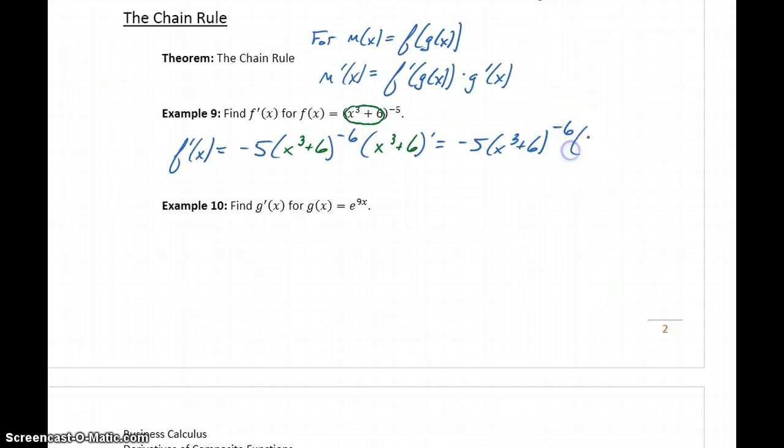In this case the derivative of that interior function will be 3x squared, which will give us negative 15x squared all over x cubed plus 6 to the 6th power.